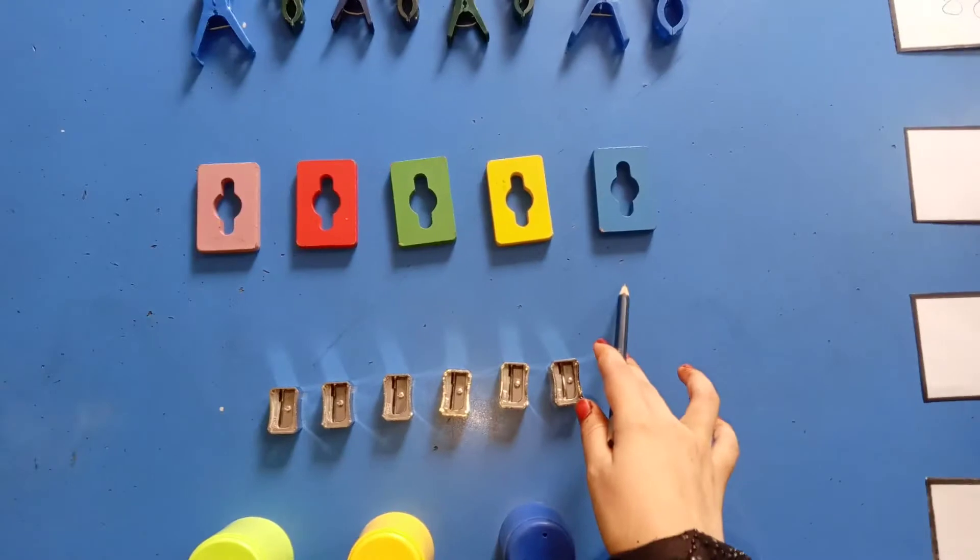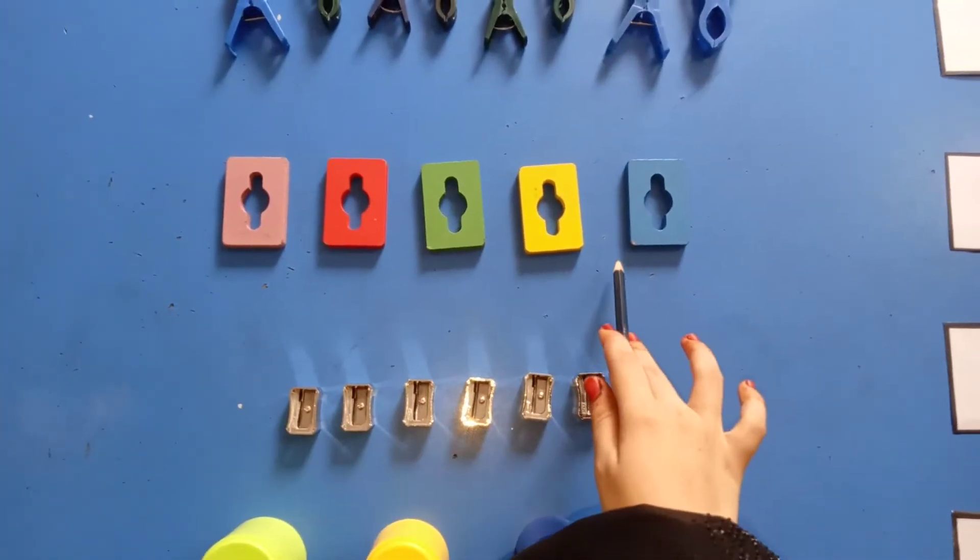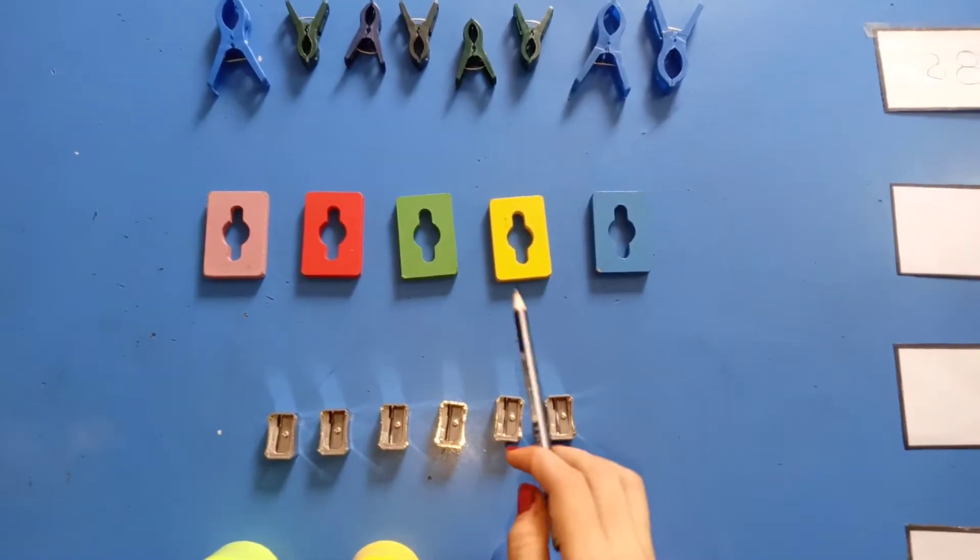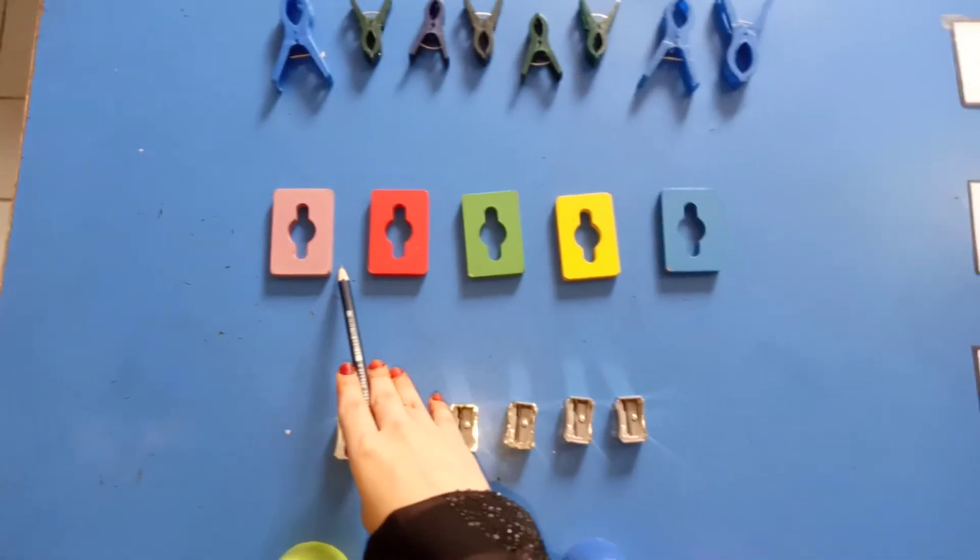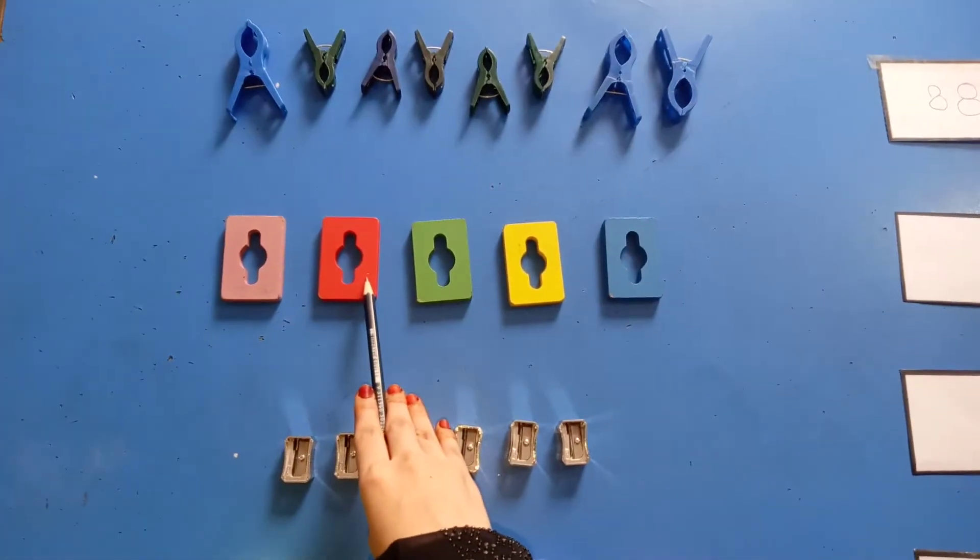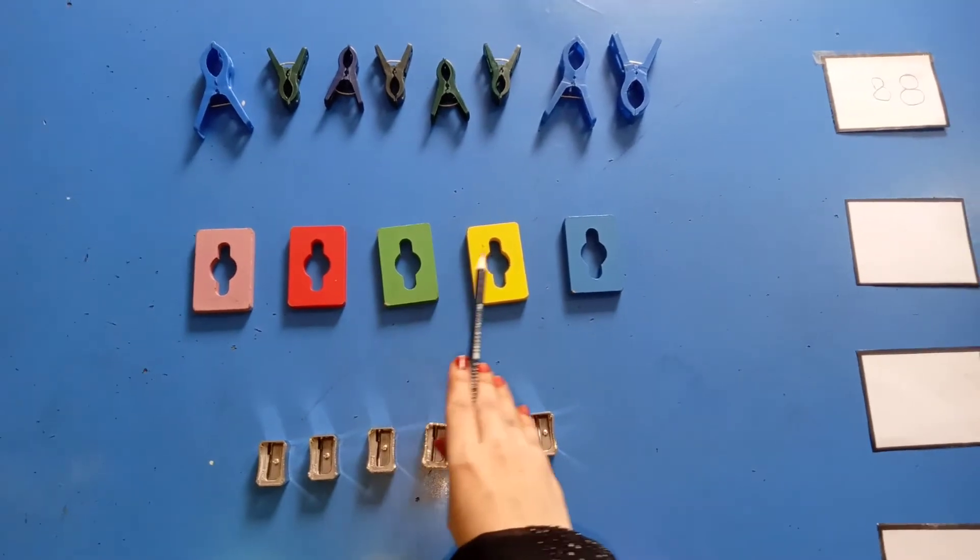These are rectangle. What the shape of these? These are rectangle. Okay, count with me. One, two, three, four,